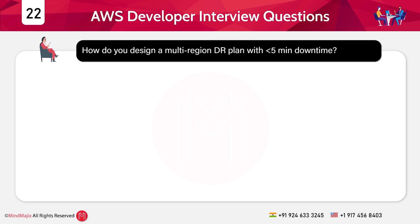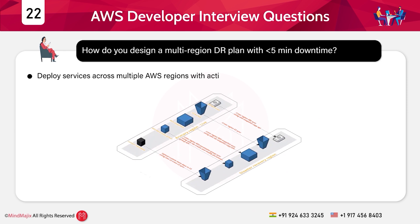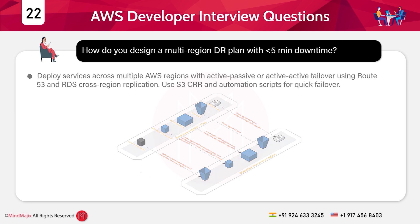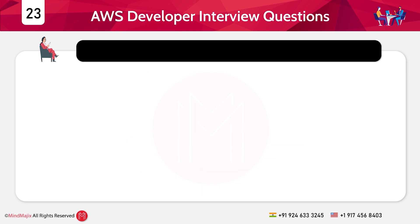Question 22: How do you design a multi-region disaster recovery plan with less than five minutes of downtime? Answer: Deploy services across multiple AWS regions with active-passive or active-active failover using Route 53 and RDS cross-region replication. Use S3 Cross-Region Replication and automation scripts for quick failover.